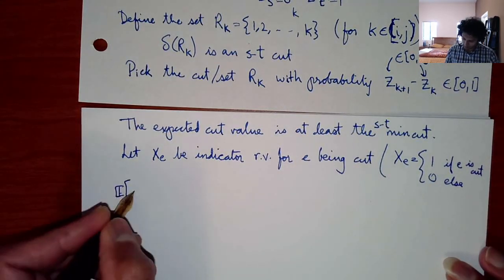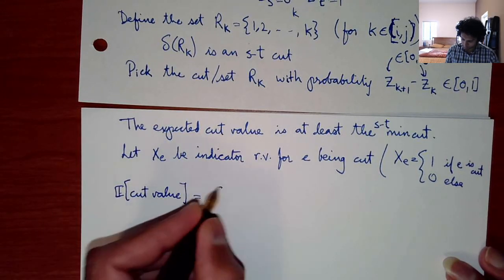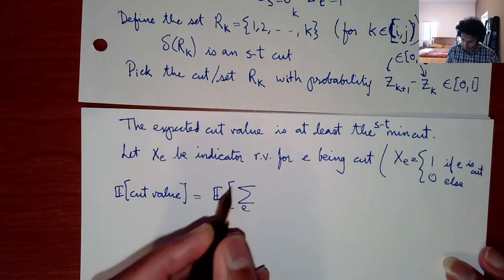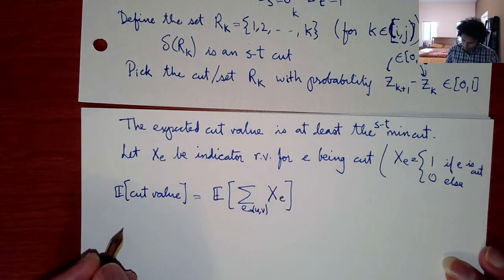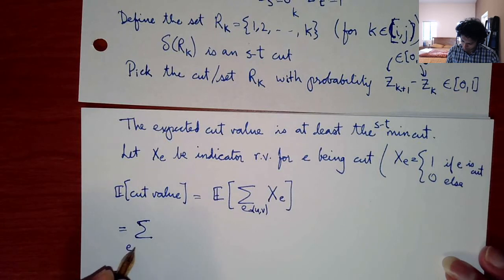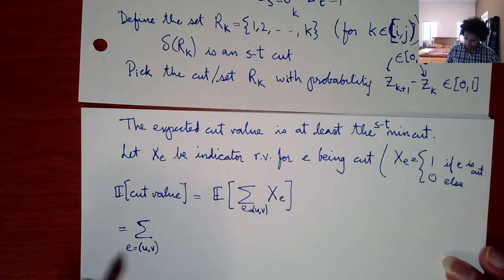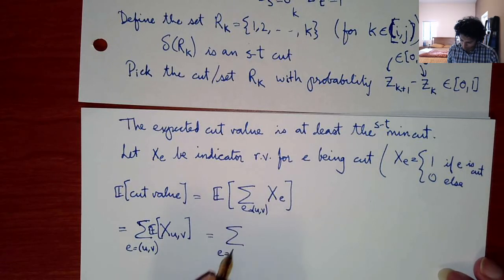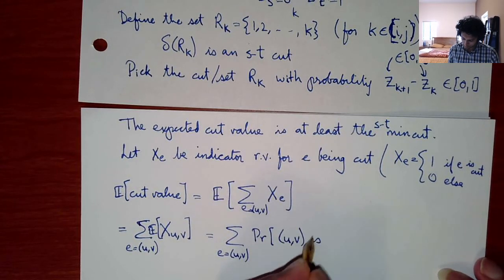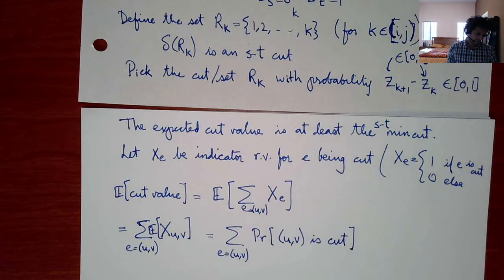The expected cut value is the expectation of the sum over all edges (u,v) of X_{uv}. By linearity of expectation, this equals the sum over all arcs (u,v) of the probability that (u,v) is cut.